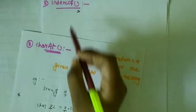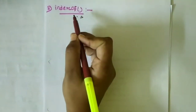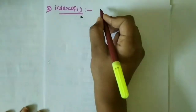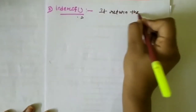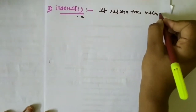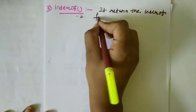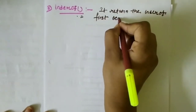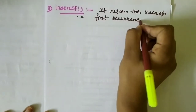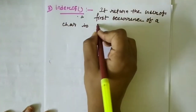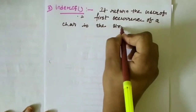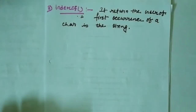In today's video, I am going to discuss two important functions: indexOf and lastIndexOf. The indexOf function is the opposite of the charAt function. The definition of indexOf is: it returns the index of the first occurrence of a character in the string.